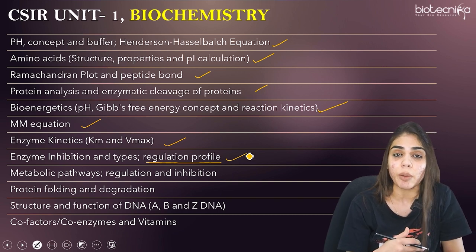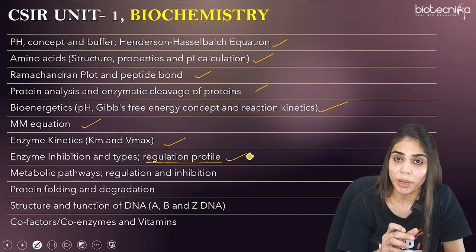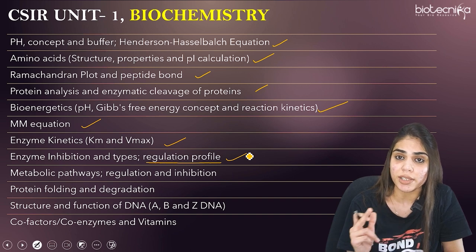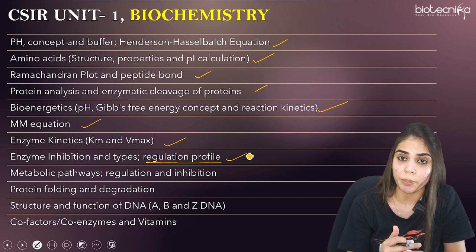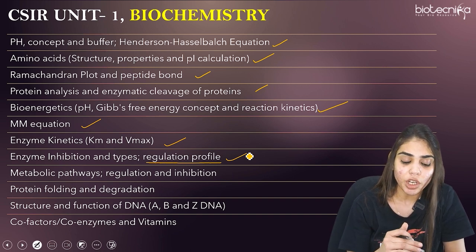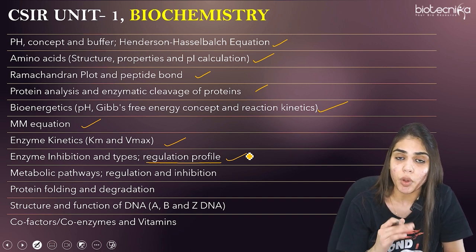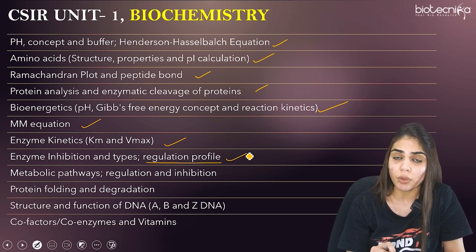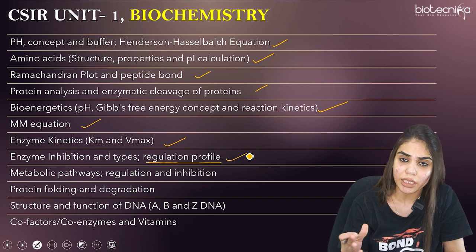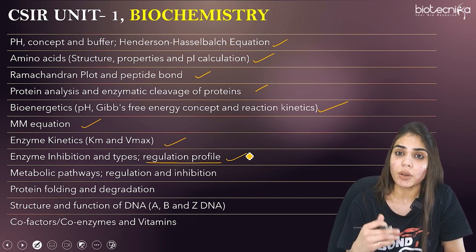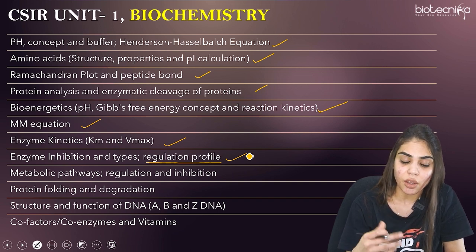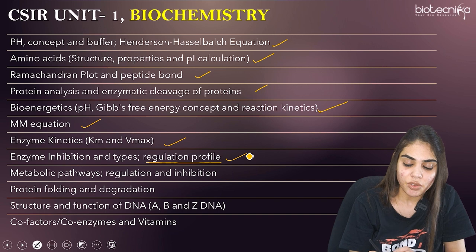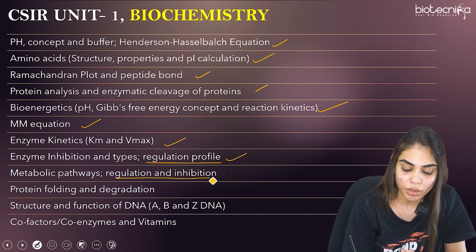The next topic is metabolic pathways, which you are also studying in Unit 6. Make sure you study metabolic pathways like glycolysis — its regulation, enzymes needed, inhibitors, activators, everything. Glycolysis, TCA cycle, oxidative phosphorylation — their regulation as well as inhibition are all important topics to cover.